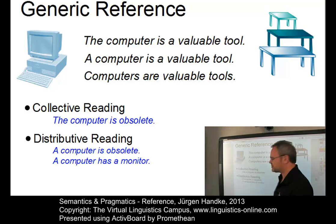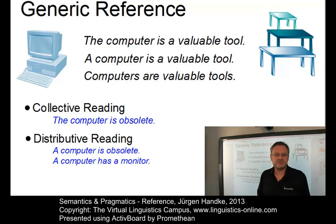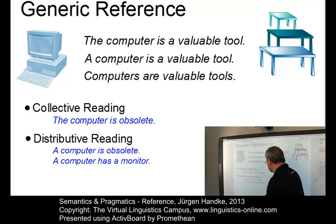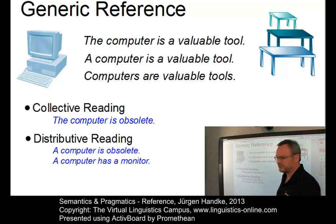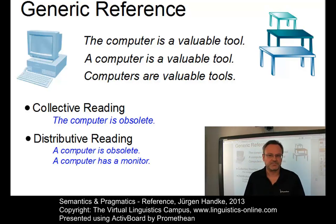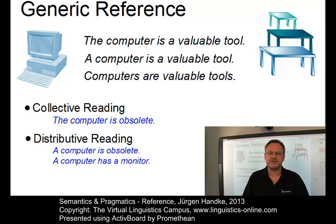For example, 'The computer is obsolete' is a collective reading. Sentences may also make statements about each individual member of a class — called a distributive reading — such as 'A computer is obsolete' or 'A computer has a monitor.' Having discussed the types of reference, the central question arises: how can we define these various types of reference?